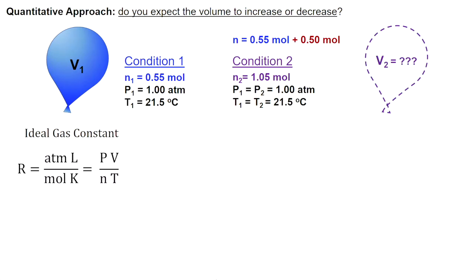A quantitative approach is going to use the data provided in the question and a simple calculation to come to the same conclusion. This can be very helpful for math-minded students. Also, a great way to verify your prediction is correct. Again, we'll start with our ideal gas constant R and our ideal gas equation.